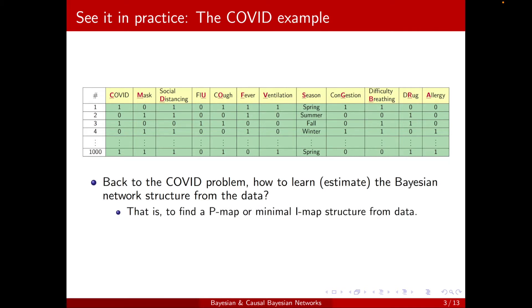That is equivalent to asking how to factorize the joint probability distribution, namely how to find a P-map or a minimal I-map structure from data. This task is called Structured Learning.